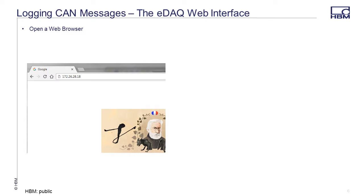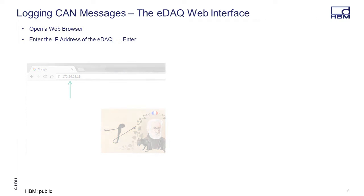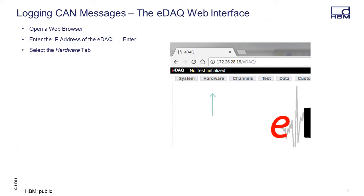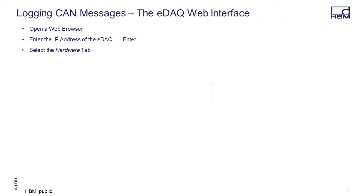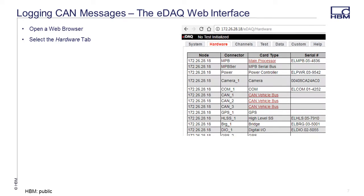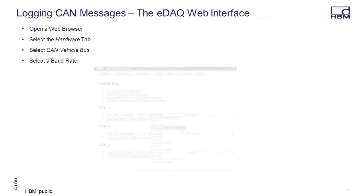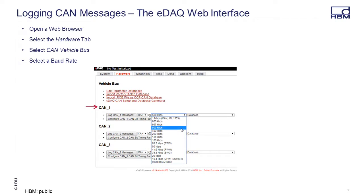To log CAN data, start by opening a web browser. On the URL line of the browser, type in the IP address of the EDAC to get connected to the EDAC. Next, select the Hardware tab. In the Card Type column, select any CAN vehicle bus link. The SOMET CR was connected to the CAN1 port, so I set the bit rate of CAN1 to 500 kilobits.